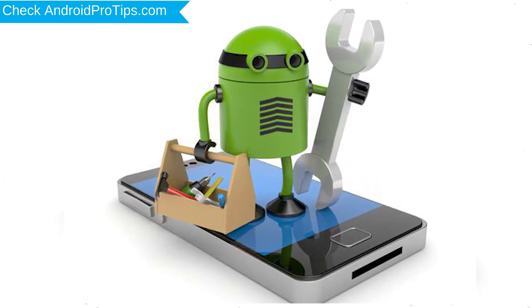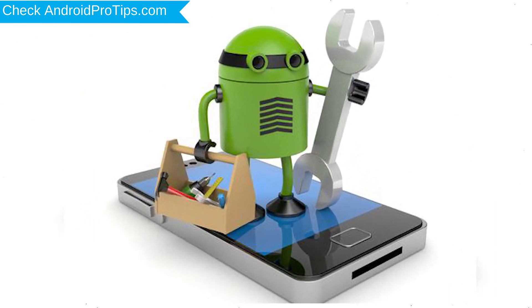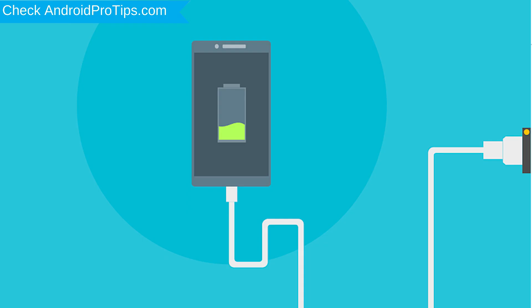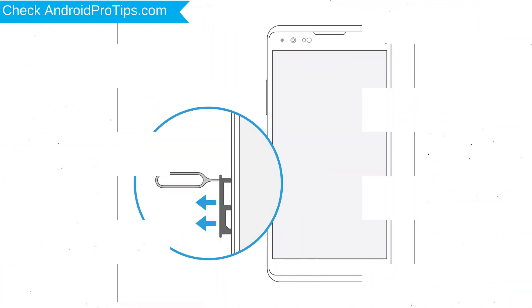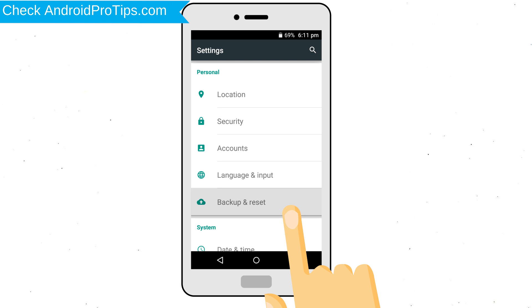Before resetting your mobile, your mobile battery must be above 50%. Remove SD cards and SIMs. Back up your Android mobile data if possible.